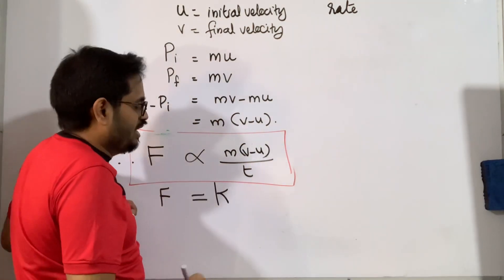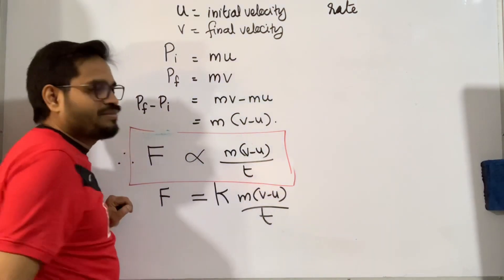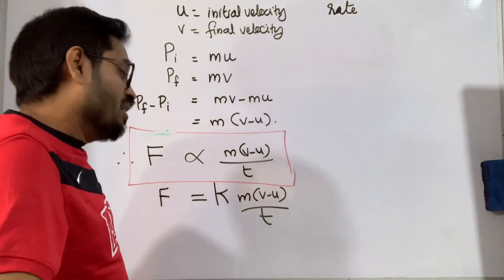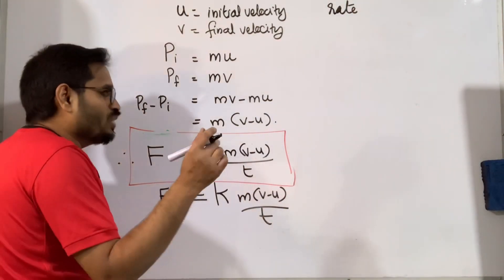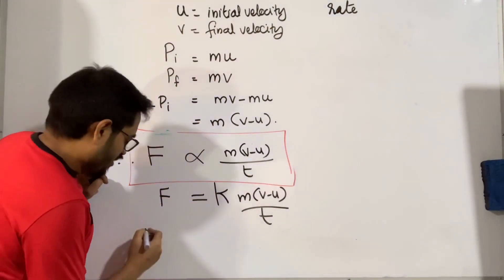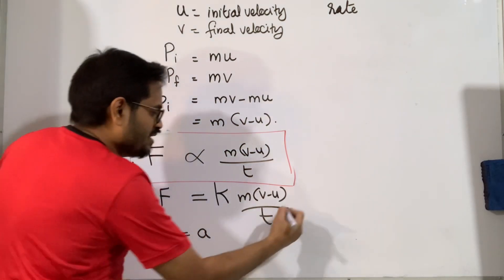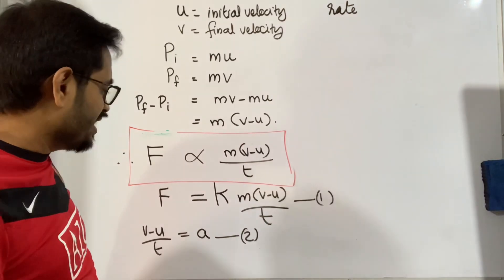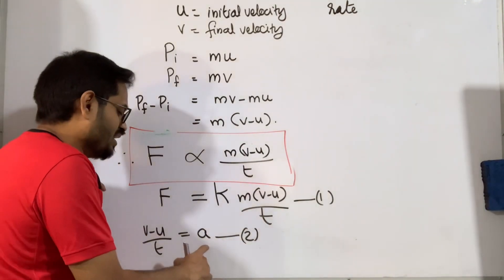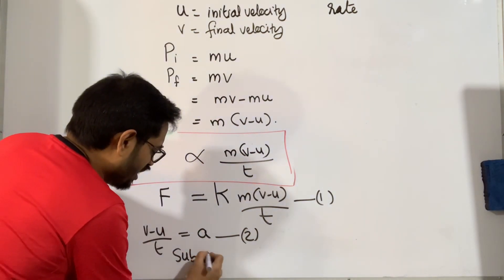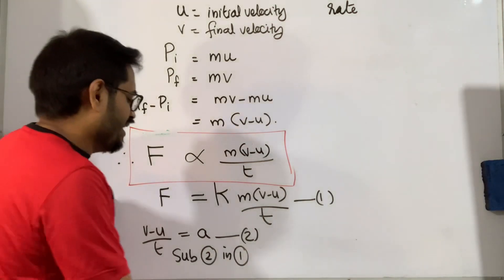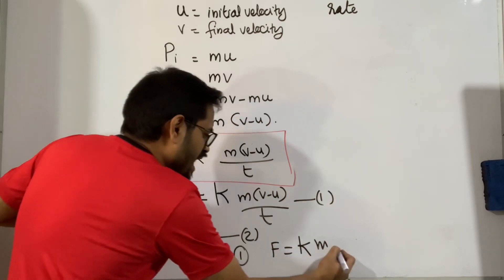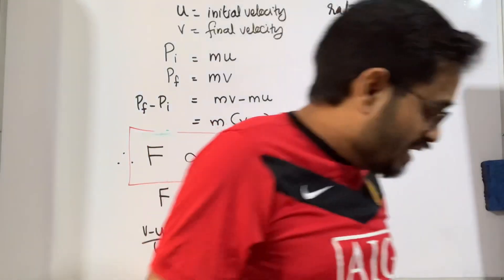We now have a constant k and a formula. We can simplify further: acceleration a is the rate of change of velocity, so (v − u) / t = a. We take this as equation 2. Substituting equation 2 into equation 1: F = kma. That is the mathematical derivation for Newton's Second Law of Motion.